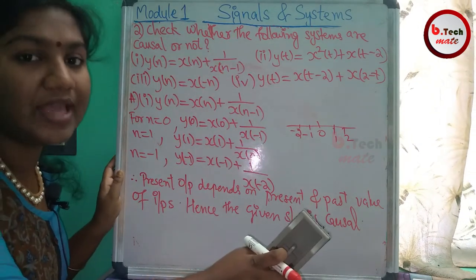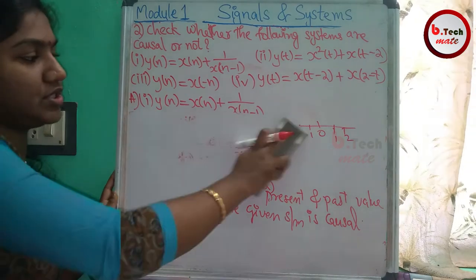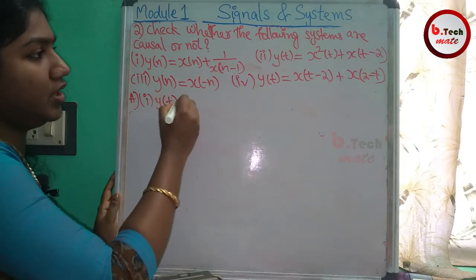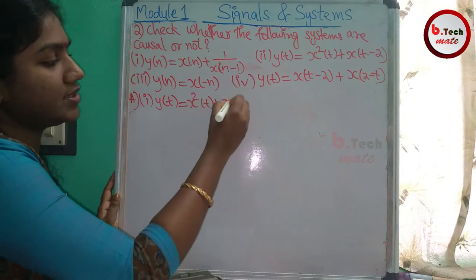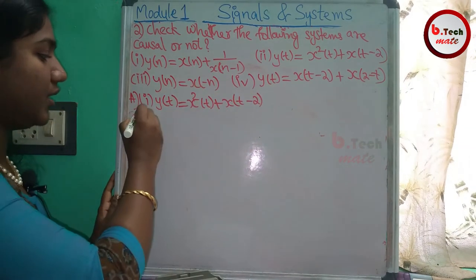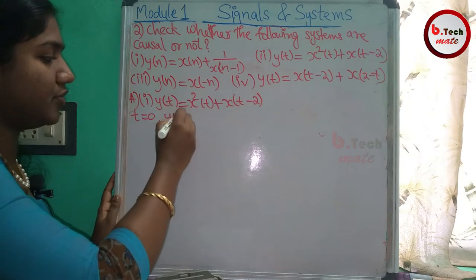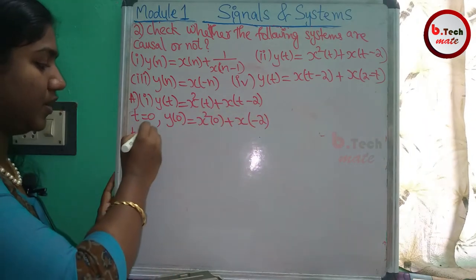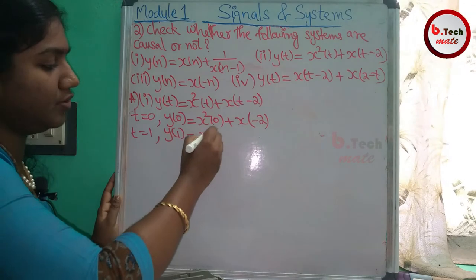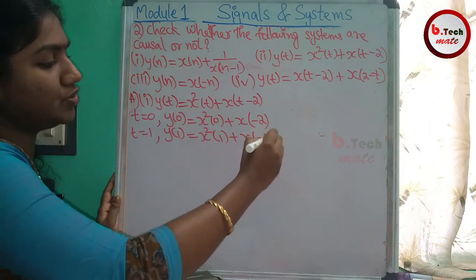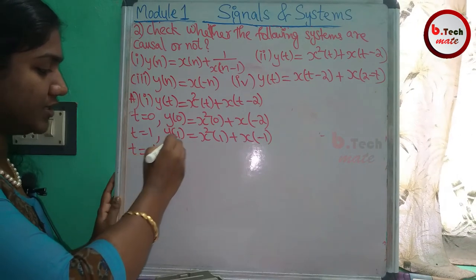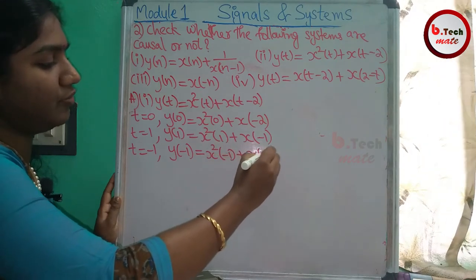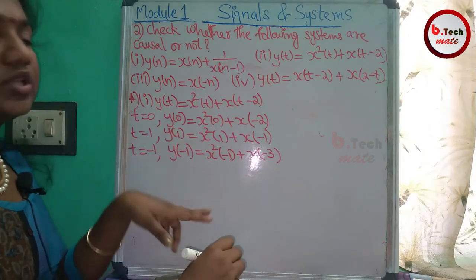Now let's check the second system. For t = -1, y[-1] = x²[-1] + x[-1-2] = x²[-1] + x[-3].